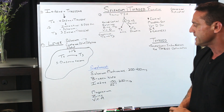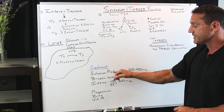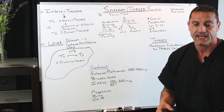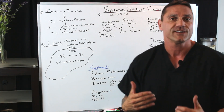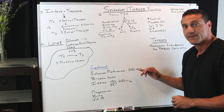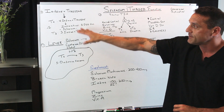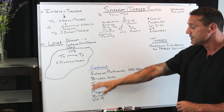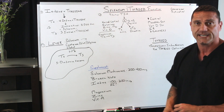Then you want to replace it with a supplement: selenium methionine. Selenium methionine is a phenomenal supplement because you can't overdose on it. Just to keep it safe, I always recommend a dose between 200 and 400 micrograms daily, because that's going to supply the body with selenium. Brazil nuts are also phenomenal — loaded with selenium.